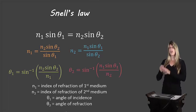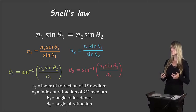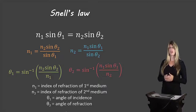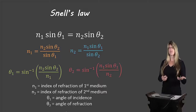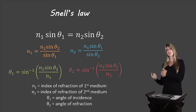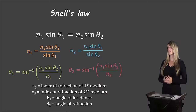Let's take a look at Snell's Law. First, let's look at the equation in white there — that's the standard version of Snell's Law. It shows the relationship between what's happening in the first medium to what's happening in the second medium. So n1 stands for the index of refraction in the first medium, theta1 is the angle of incidence, n2 is the index of refraction in the second medium, and theta2 is the angle of refraction.